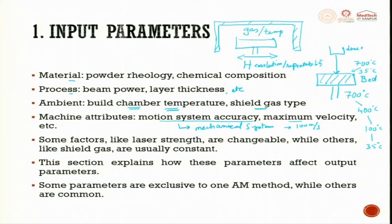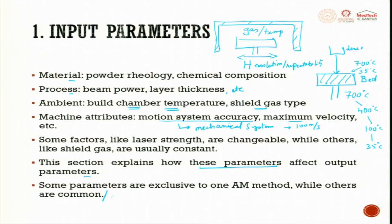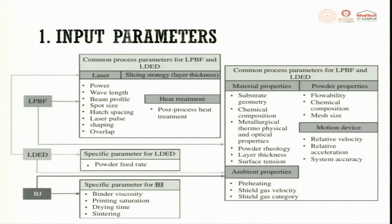Some factors like laser strength are changeable — you can vary power from 200 millijoules to 300 millijoules, change pulse count, etc. — while others like shielding gas are usually constant once you purge with argon. Some parameters are exclusive to AM processes, such as nozzle step size movement, while others are common. These are the various input parameters for different processes.